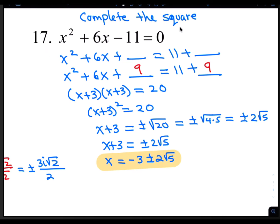For number 17, I'm choosing to complete the square. We'll need to move the negative 11 over to the right by adding 11. Then we fill in the blank spaces by taking half of 6 and squaring it. Half of 6 is 3, and 3 squared is 9. So we'll add 9 to both sides. Factoring the left side gives us x plus 3 squared. And 11 plus 9 is 20. Now let's take the square root of both sides: x plus 3 equals plus or minus the square root of 20, which is plus or minus 2 radical 5. We move the 3 over to the right by subtraction, so x is negative 3 plus or minus 2 radical 5.